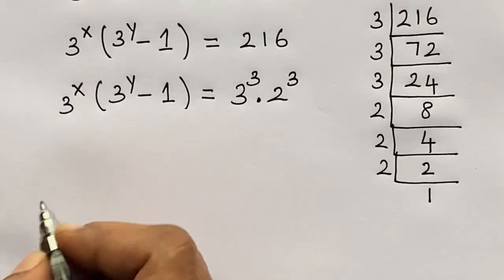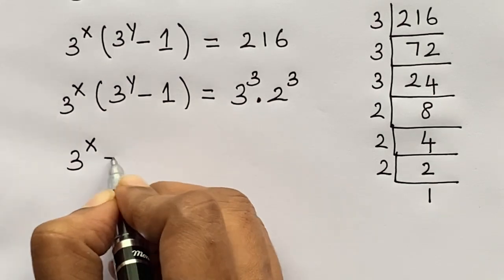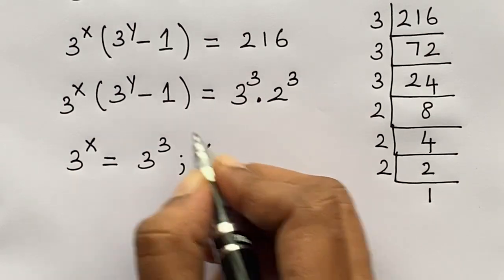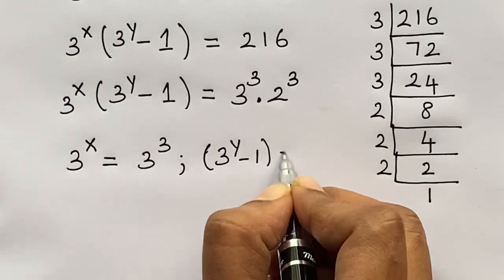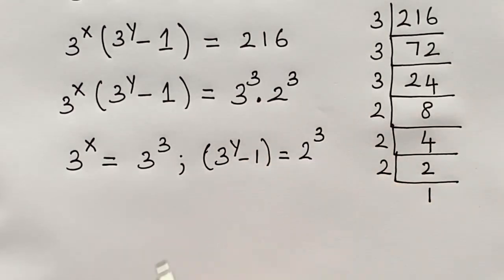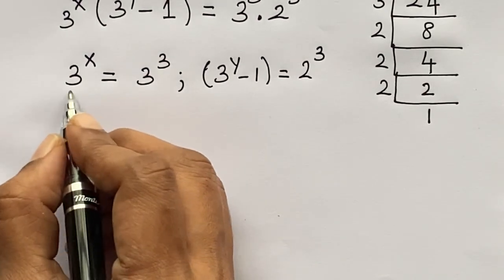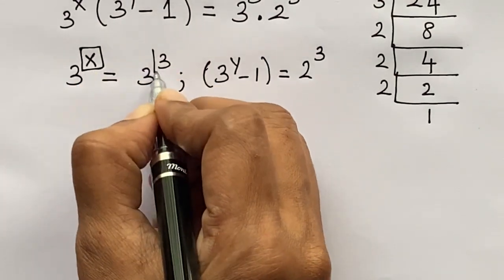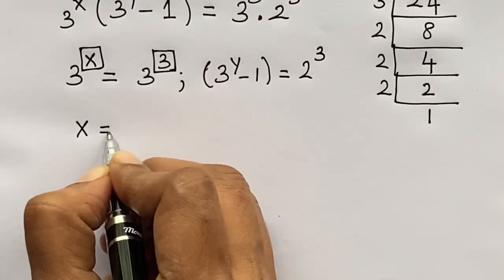Now let's equate these terms. That is, 3 raised to the power x equals 3 raised to the power 3. Here we have the same base, that is 3, so we equate its exponents. We get x equals 3.